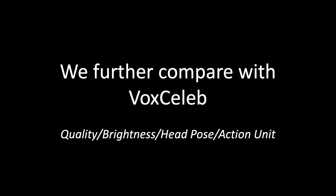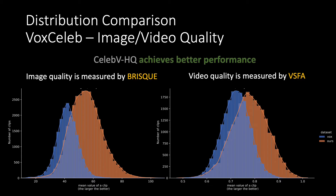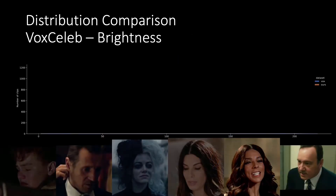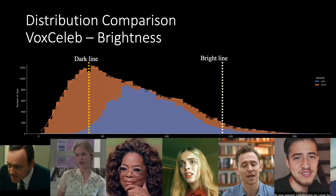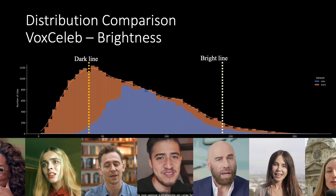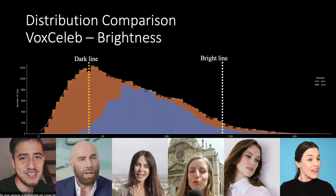We compare with the face video dataset VoxCeleb. We use BRISQUE as an image quality evaluation metric and VSFA for video quality measurement. CelebVHQ offers higher quality than VoxCeleb at both image and video levels. We also compare video brightness distribution; CelebVHQ contains more dark samples because it features a wilder setting, while VoxCeleb is focused on interview and speech.